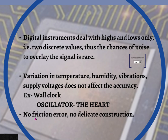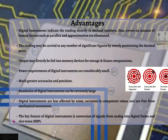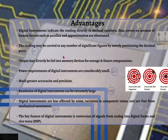Moreover, digital instruments have no friction and no delicate construction like that of analog instruments. The key feature of digital instruments is conversion of signals from analog into digital form and vice versa — in other words, we term this digital signal processing. One more thing regarding digital instruments is that we want them to be more precise and accurate.